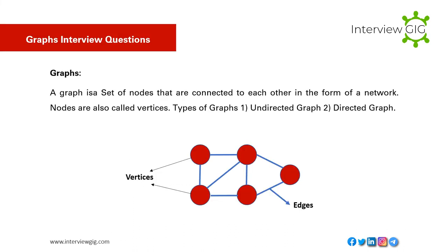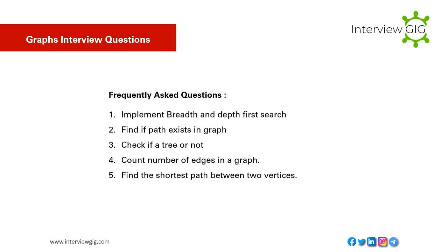Graph interview questions: A graph is a set of nodes connected to each other in the form of a network. Nodes are also called vertices. Types of graph: undirected graph and directed graph. Frequently asked questions: 1. Implement breadth and depth first search. 2. Find if a path exists in a graph. 3. Check if a graph is a tree or not. 4. Count the number of edges in a graph. 5. Find the shortest path between two vertices.